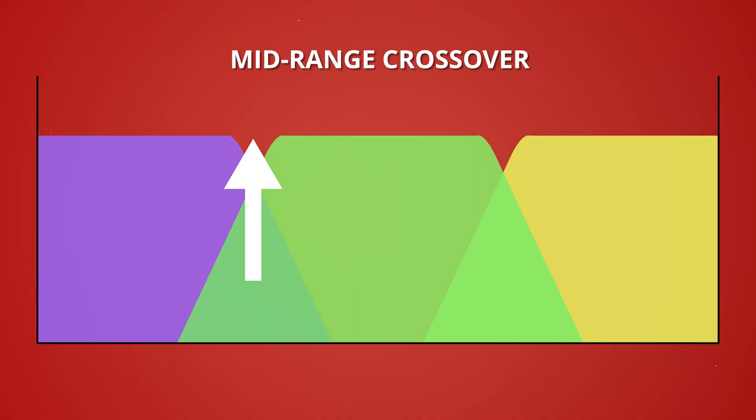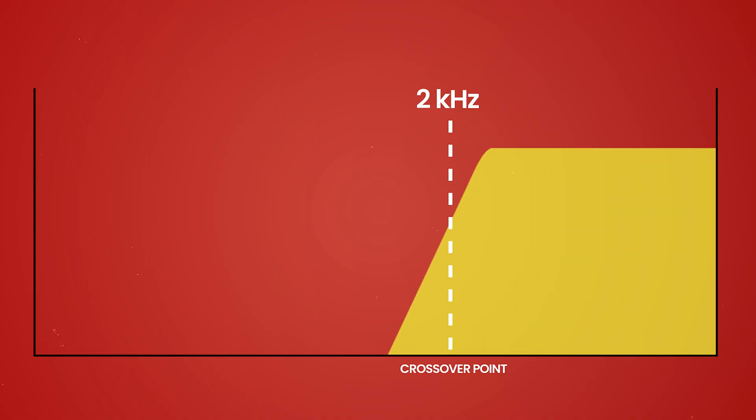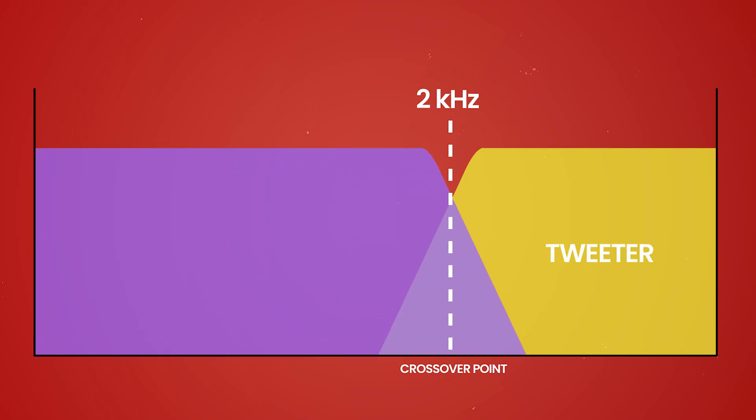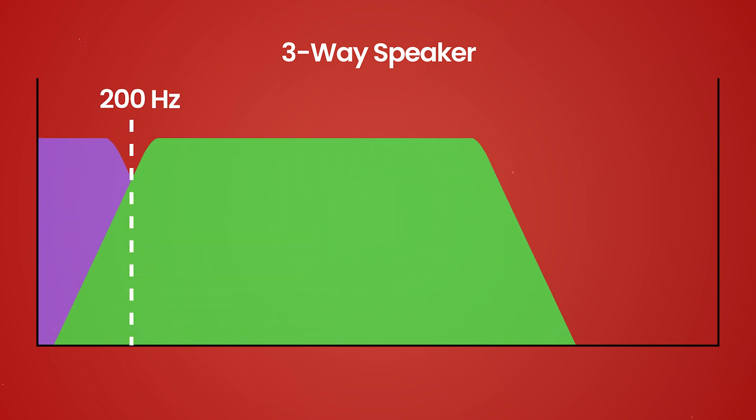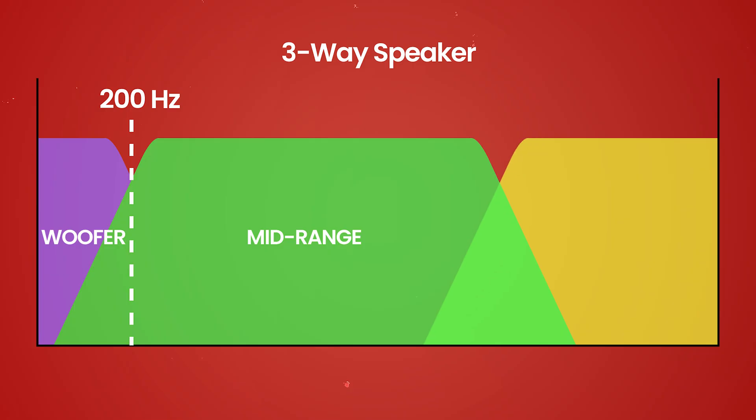In a three-way speaker, a crossover can be designed so that it has two frequency points. One for the point between the woofer and the mid-range, and another for a point between the mid-range and the tweeter. For example, a two-way crossover point might be two kilohertz. This means that frequencies above two kilohertz are directed to the tweeter, while frequencies below two kilohertz are directed to the woofer. In a three-way speaker, there might be a 200 hertz point between the woofer and the mid-range, and then, say, a three kilohertz point between the mid-range and the tweeter.